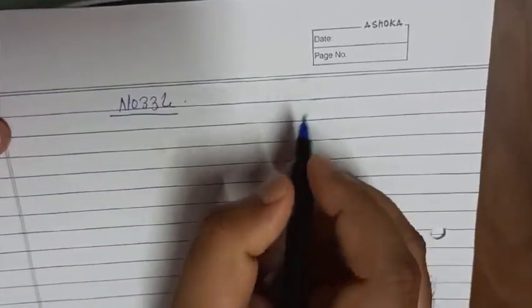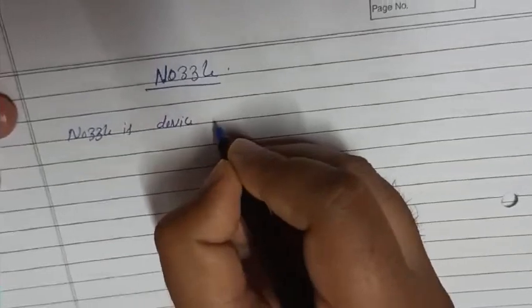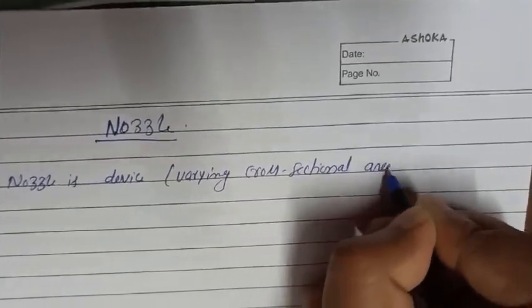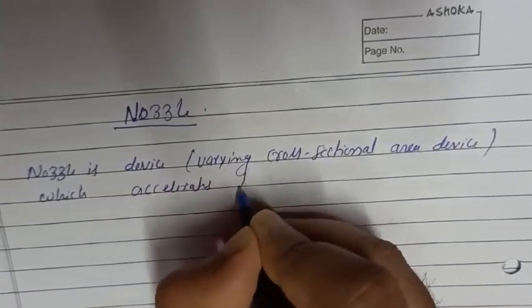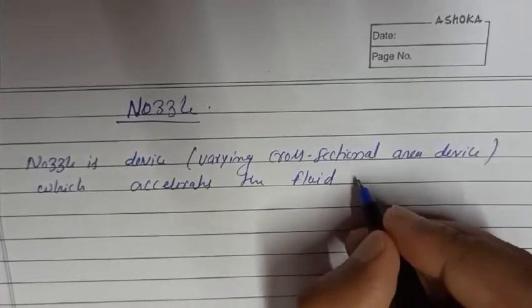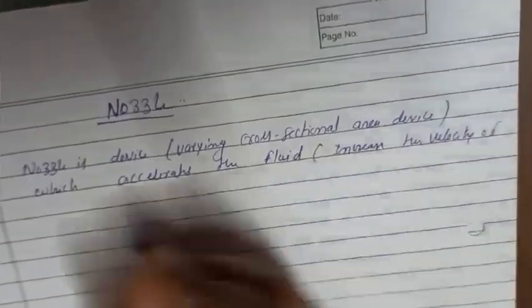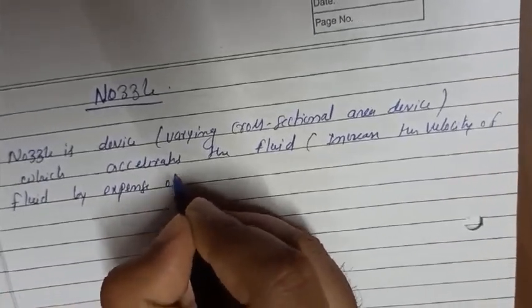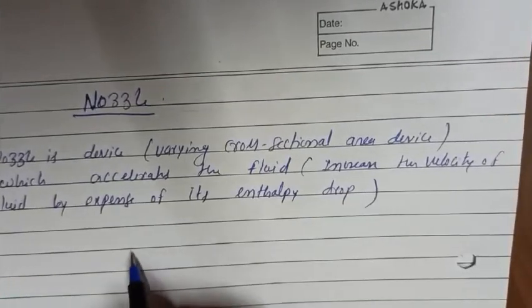Today we will start the chapter of nozzle. A nozzle is a device with varying cross-sectional area which accelerates the fluid, meaning it increases the velocity of the fluid by the expense of its enthalpy drop.